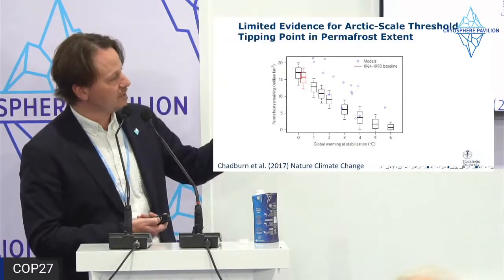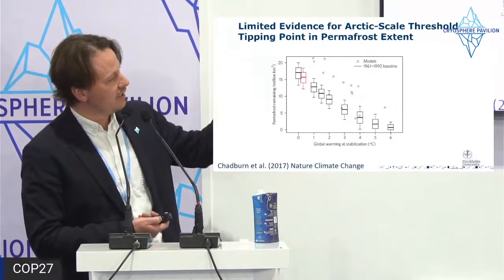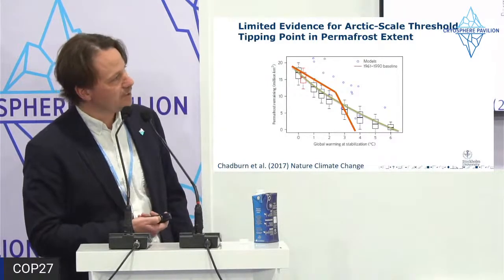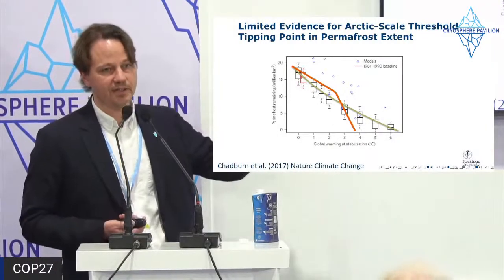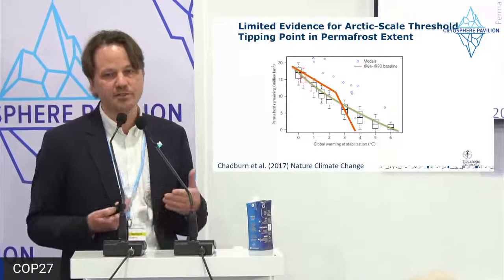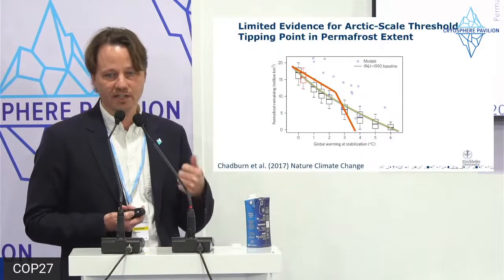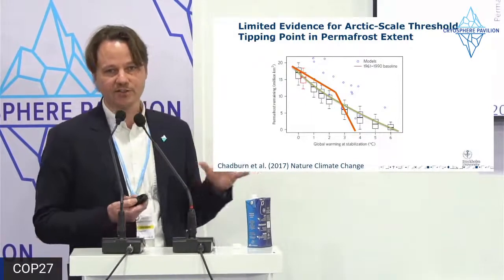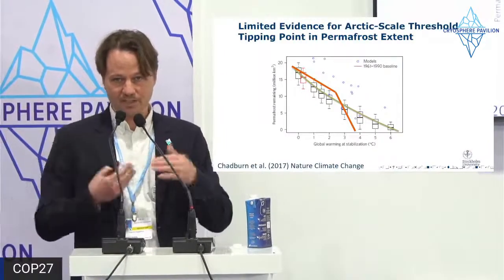Here is one example supporting this: on the x-axis is global warming at stabilization at different temperatures, on the y-axis is how much permafrost will remain. If there were threshold behavior in permafrost extent, it would look like the orange line. But the green line is what we're tracking — a gradual response. This means we don't see evidence of a specific threshold, but it also means every single tenth of a degree matters. For every degree of global warming we lose four million square kilometers of permafrost.